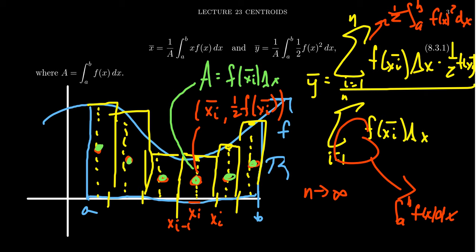Or sometimes they stick the 1 half out inside here. And so when you put those together, y-bar is going to be 1 over the area divided by 1 half f of x squared dx.